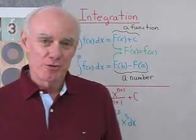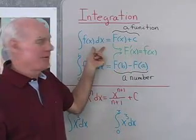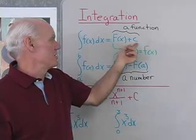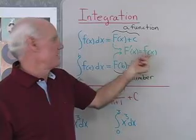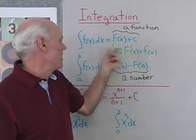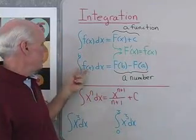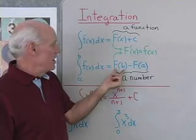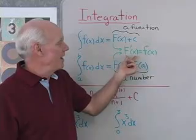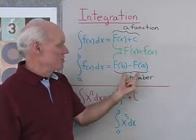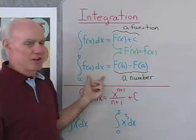Here's a little introduction to integration. Up here I've written a couple of formulas. The indefinite integral of f dx is equal to F plus c, where F happens to be the antiderivative of f — that is, if I take F and differentiate it, I get f. Over here I have the definite integral from a to b of f dx, and that turns out to be F(b) minus F(a), again where the derivative of F is f. So this turns out to just be a number. This right here is a function — this is an indefinite integral, this is a definite integral.